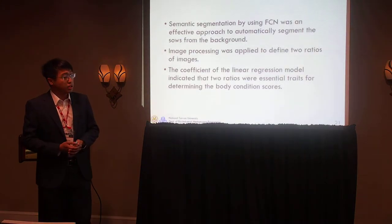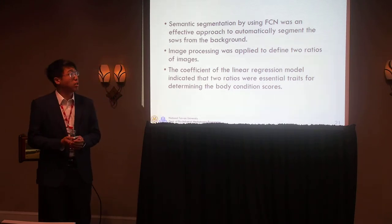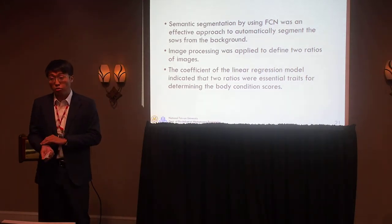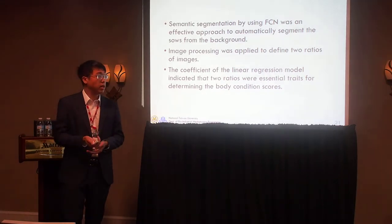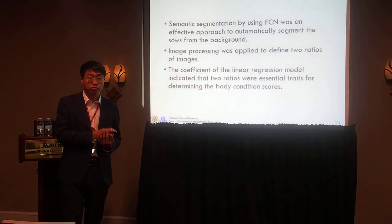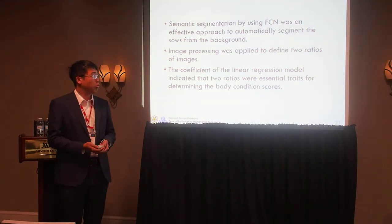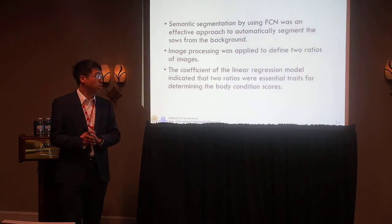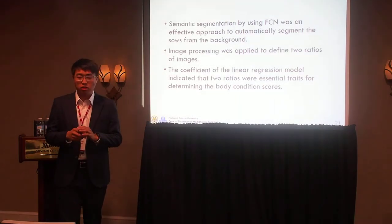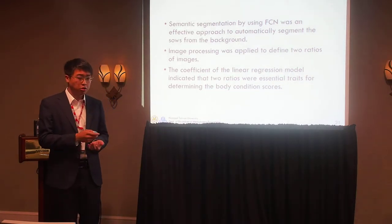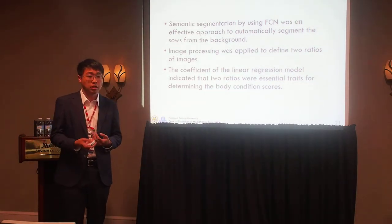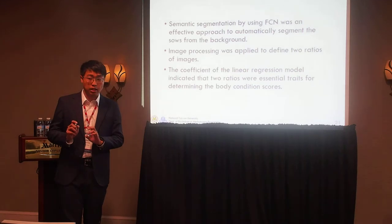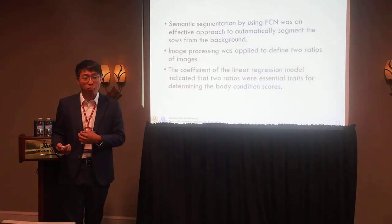In conclusion, semantic segmentation using a fully convolutional network is an effective approach to segment sows from the background, achieving an F1 score of 93%. Image processing was applied to define two ratios of the image. The coefficients of the linear regression model indicate that the two ratios are essential features for predicting the body condition score. However, the model cannot predict results precisely without more data or more diverse data, since the current data is mostly scored as 3.